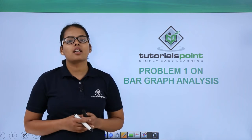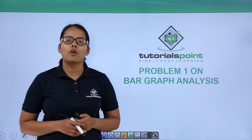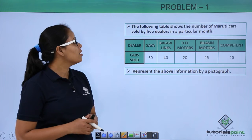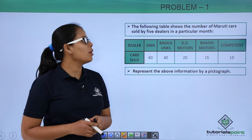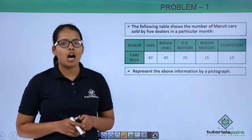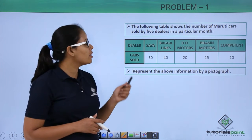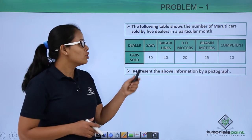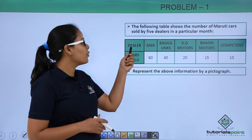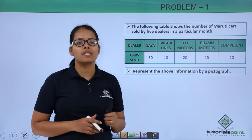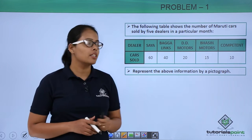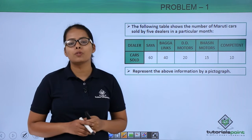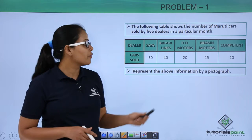Hey guys, let's discuss this problem on bar graphs. This problem says the following table shows the number of Maruti cars sold by five dealers in a particular month. In this table, the first row represents the dealers and the second row represents the cars sold by each respective dealer.